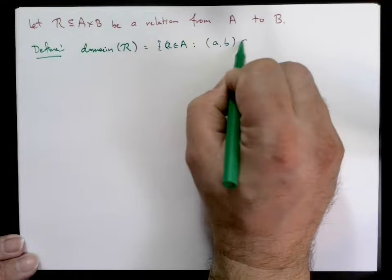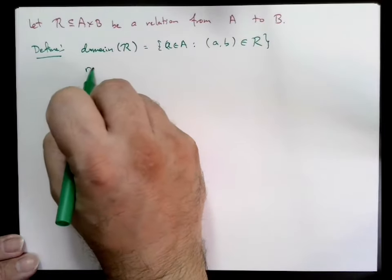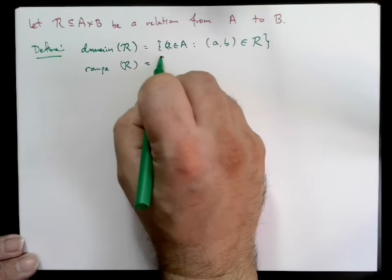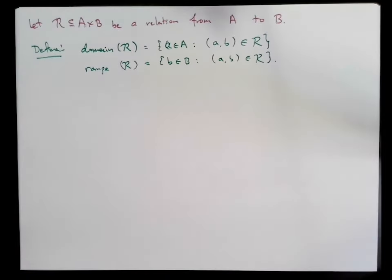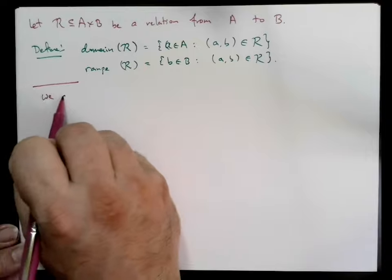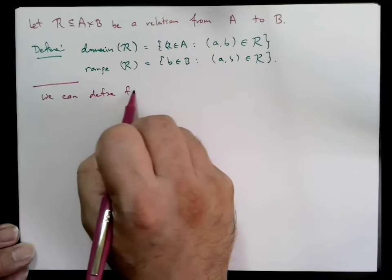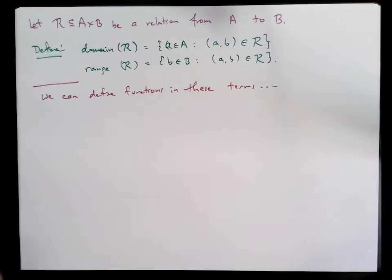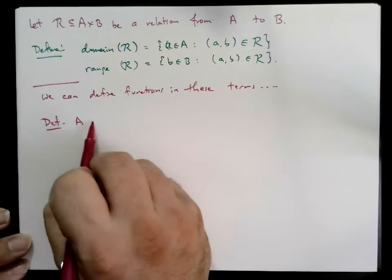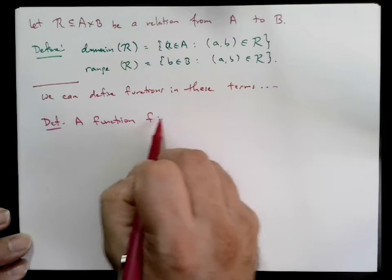We can now define the domain and the range of a relation. Let us define the domain of R to be all points a such that some pair (a,b) appears in the relation. The range of R is all points b such that (a,b) appears in the relation. Notice by definition that the domain of R is a subset of A and the range of R is a subset of B.